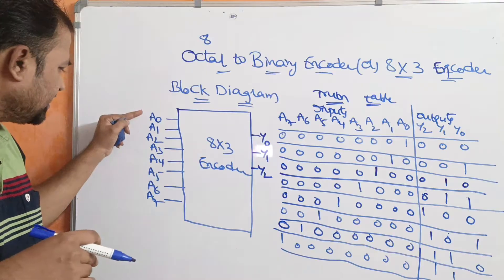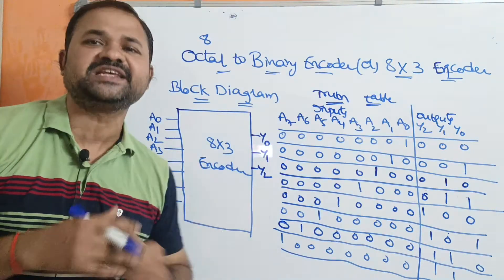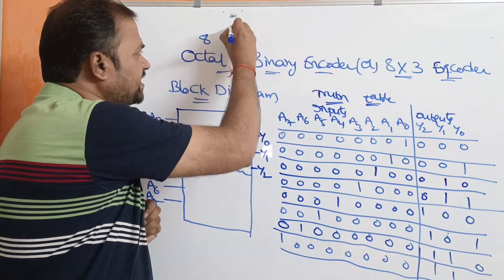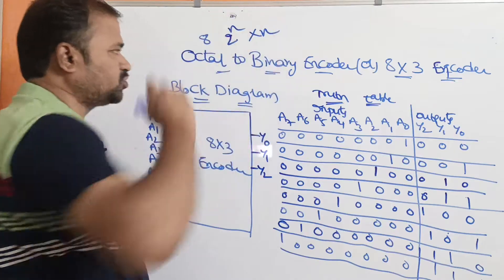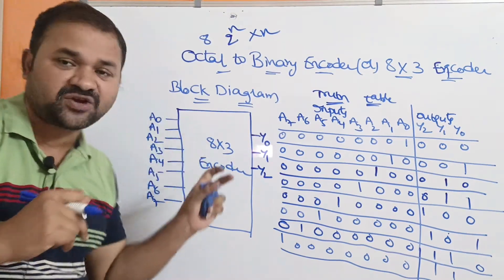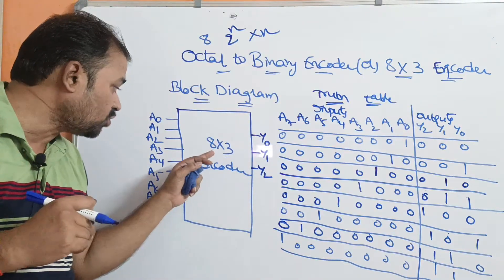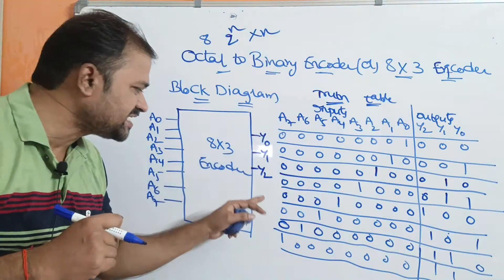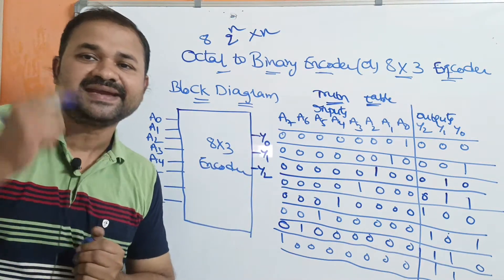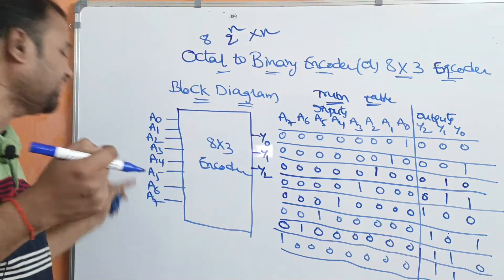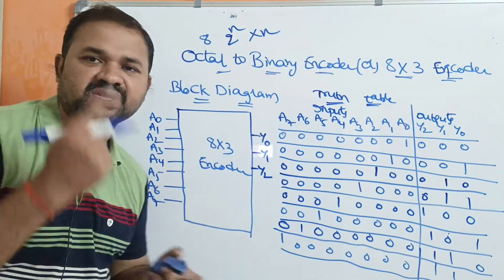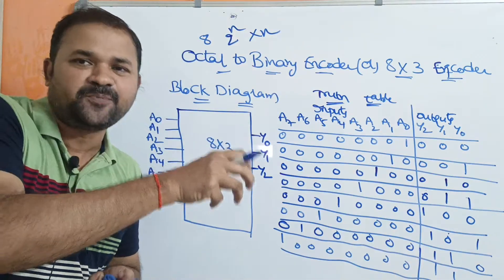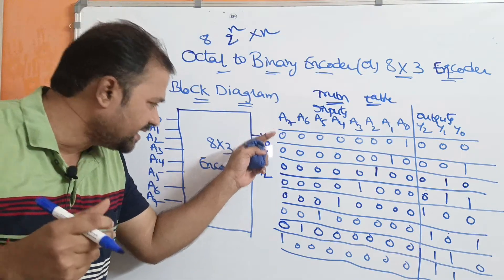It accepts totally 8 inputs and produces totally 3 outputs. An encoder accepts 2^n inputs and produces n outputs. So here the 8 by 3 encoder accepts 8 inputs from a0 to a7 and produces 3 outputs from y0 to y2. At a time, only 1 input is activated among all the 8 inputs, and that input's binary number will be displayed as the output.